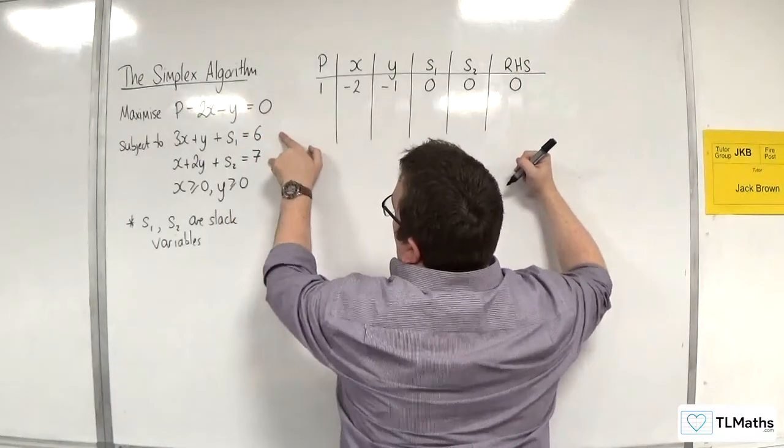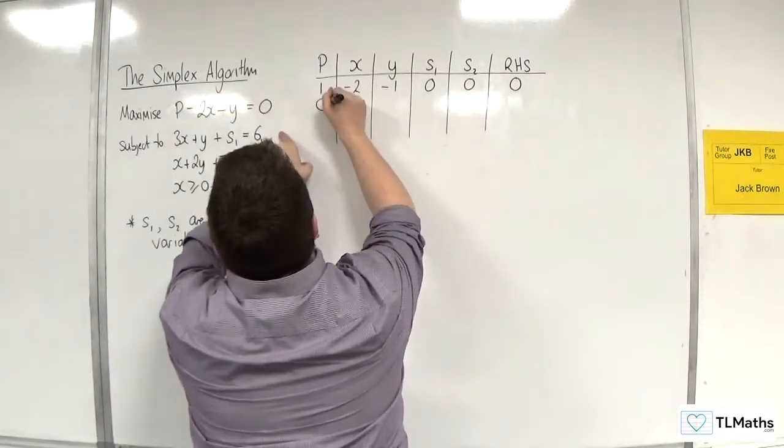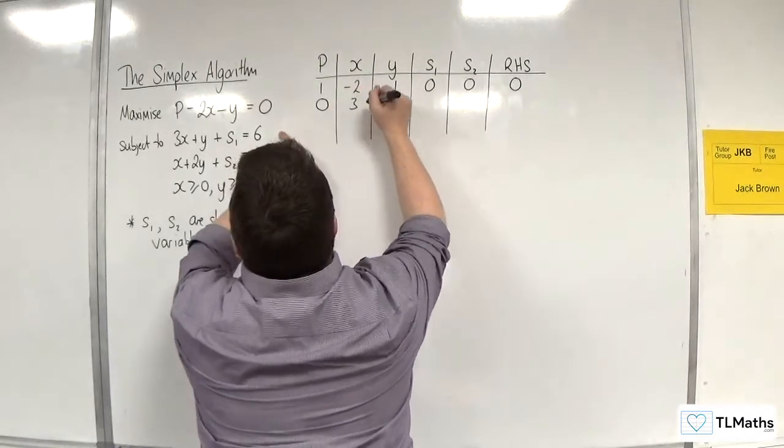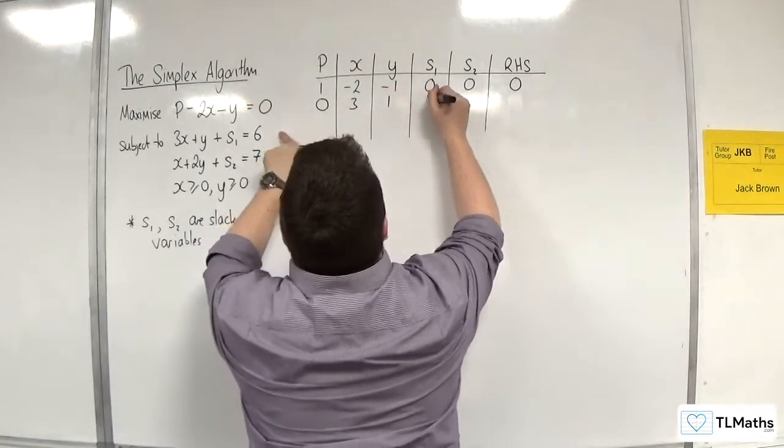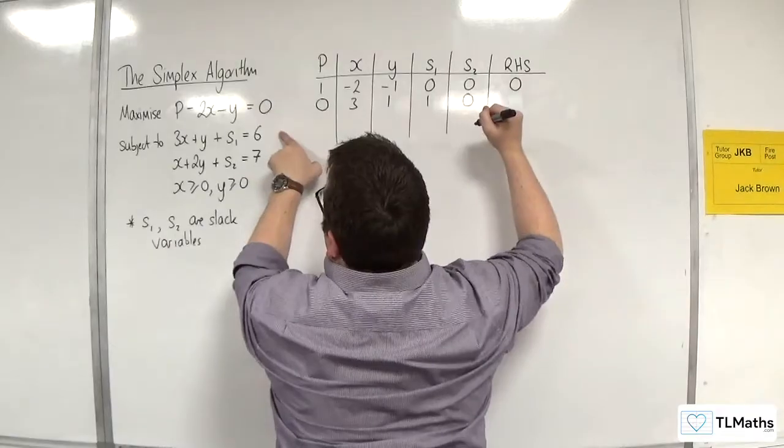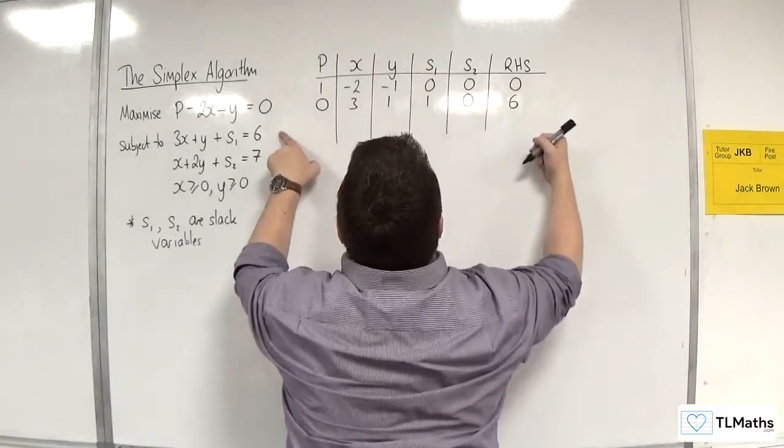Then you have your constraints, so you have no Ps, three Xs, one Y, one S1s, zero S2s, and six on the right-hand side.